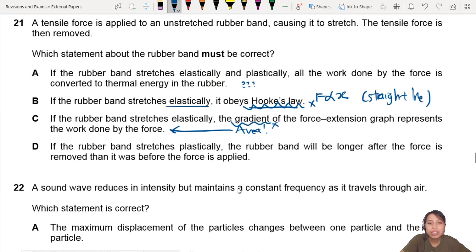Option D: If the rubber band stretches plastically, the rubber band will be longer after the force is removed. Plastic deformation means you are permanently longer. Instead of going back to the original length, you stretch it and it stays there. I like this one - I'm more convinced than A. Option A says all the work done is converted to thermal energy in the rubber.